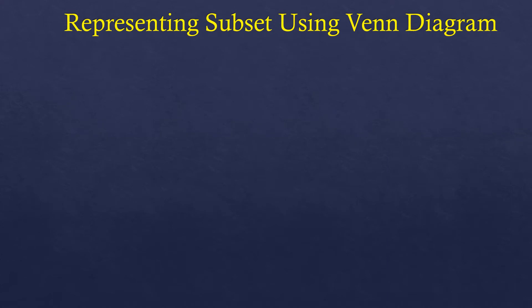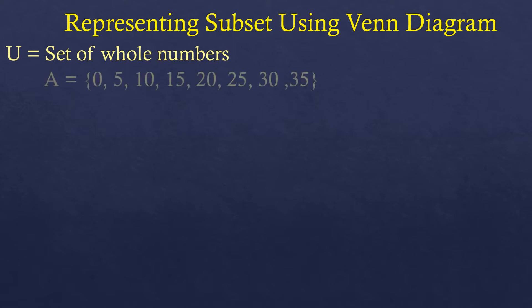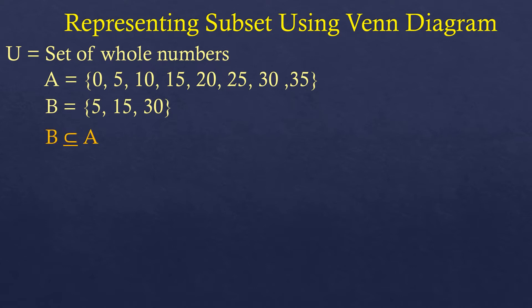Next, we are going to talk about representing a subset using a Venn diagram. We use the same universal set — the set of whole numbers — and set A with elements 0, 5, 10, 15, 20, 25, 30, and 35. And set B with elements 5, 15, and 30. As you can observe, the elements of set B — 5, 15, and 30 — can also be found in set A. So set B is a subset of set A.